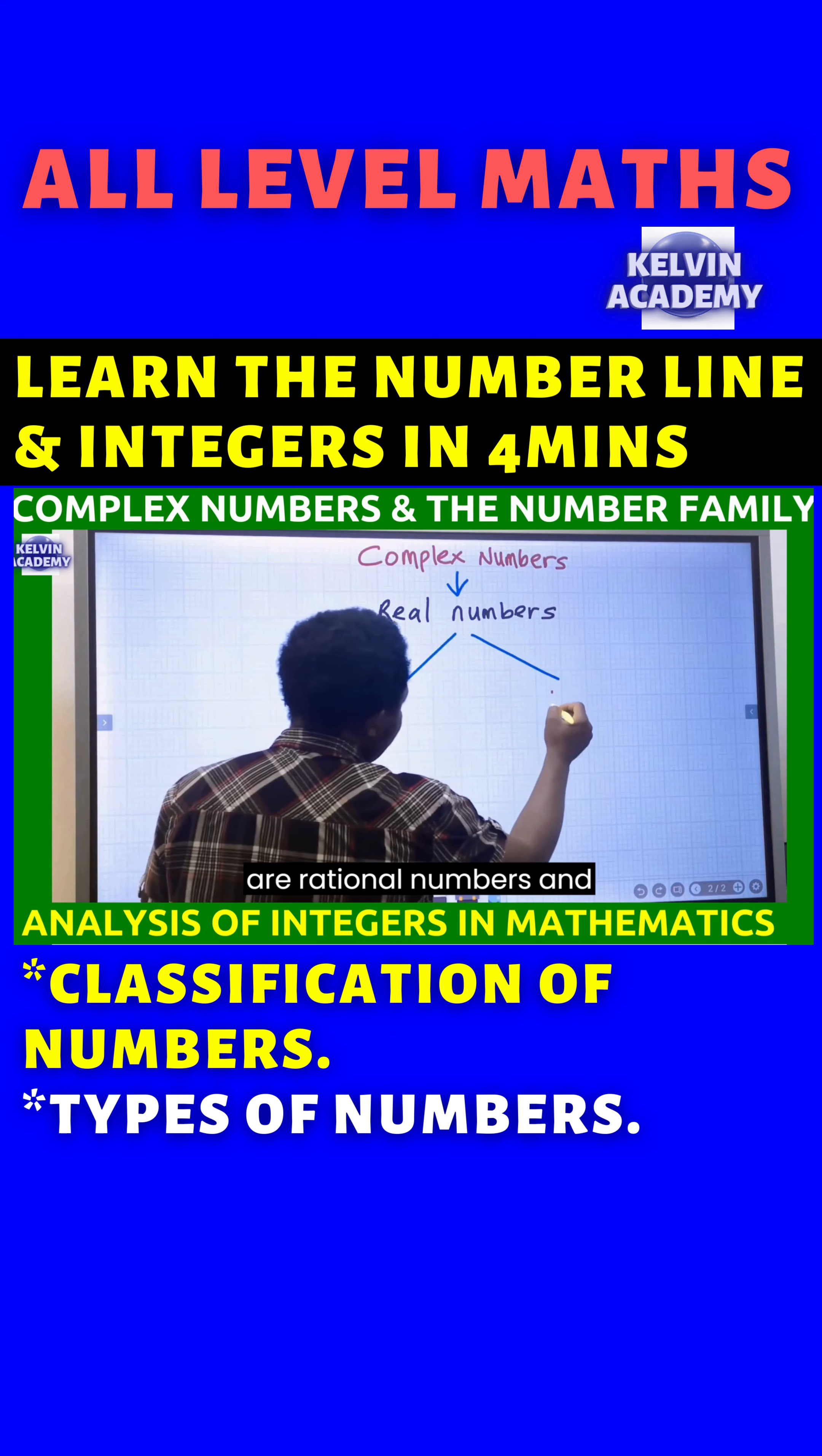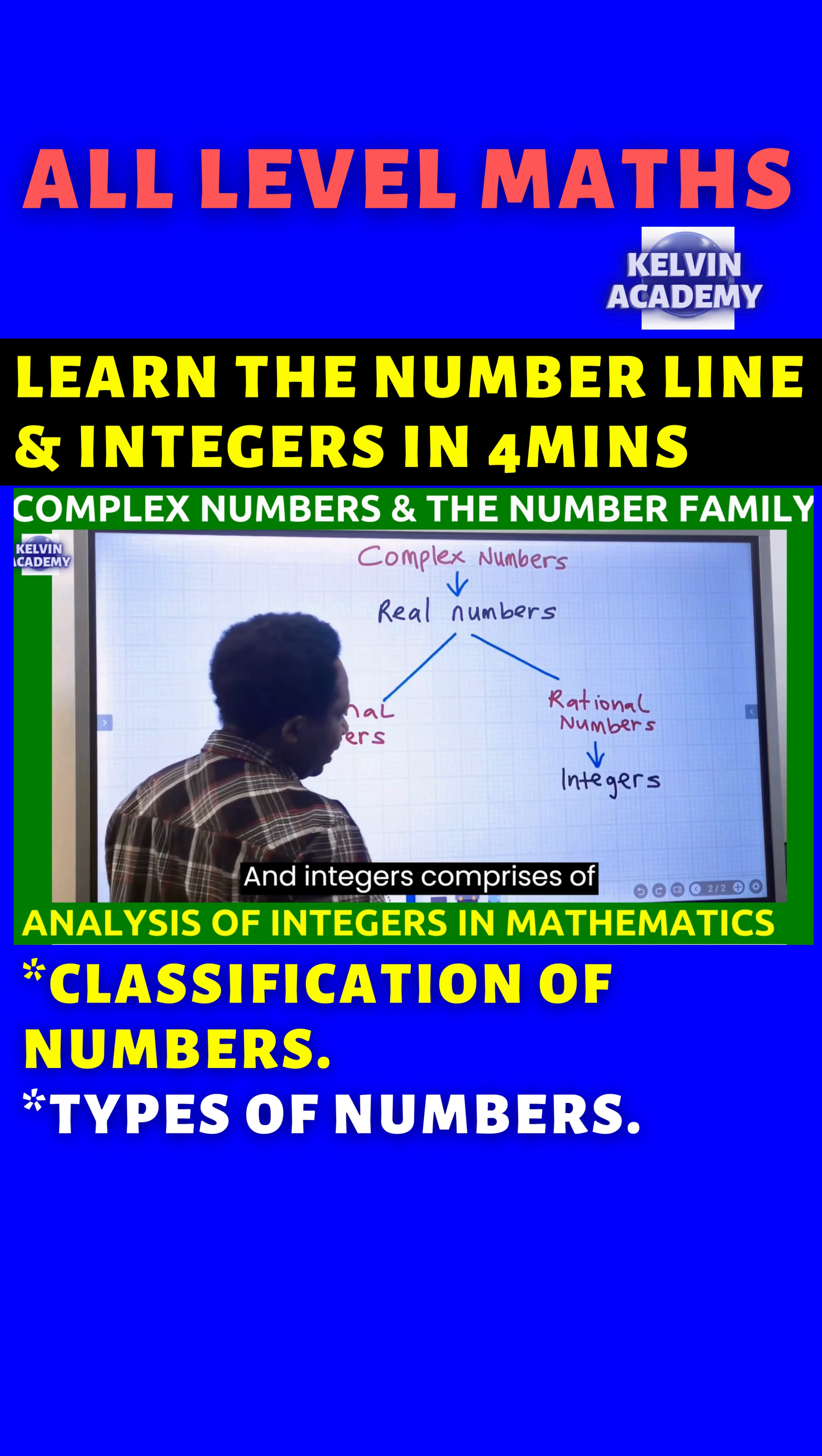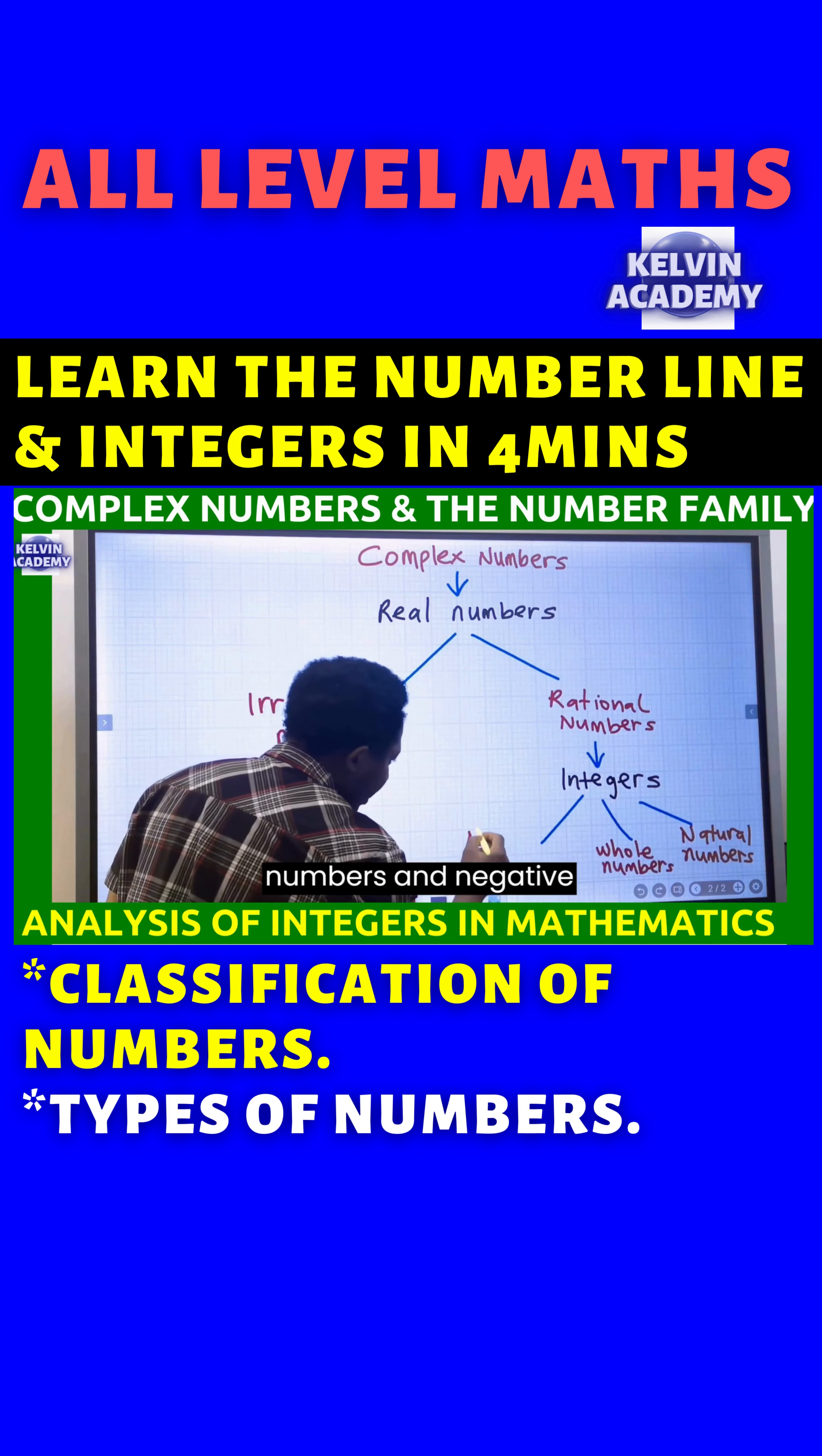These are rational numbers and irrational numbers. Rational numbers have integers. And integers comprises of three different families, which are natural numbers, whole numbers, and negative numbers.